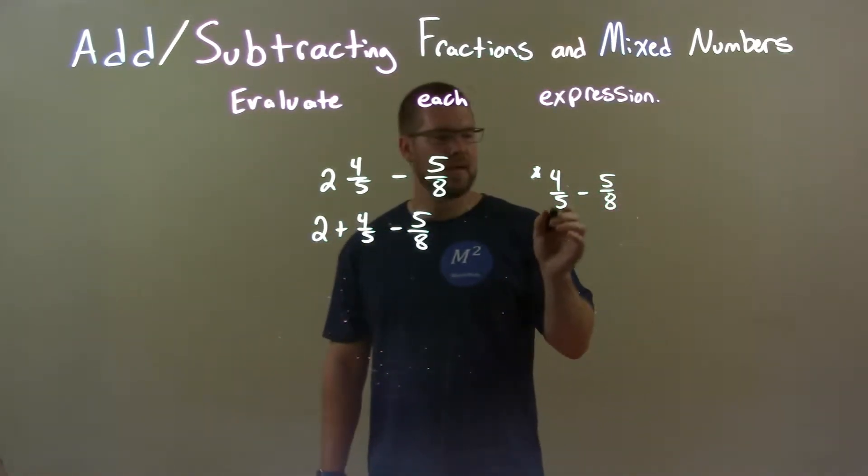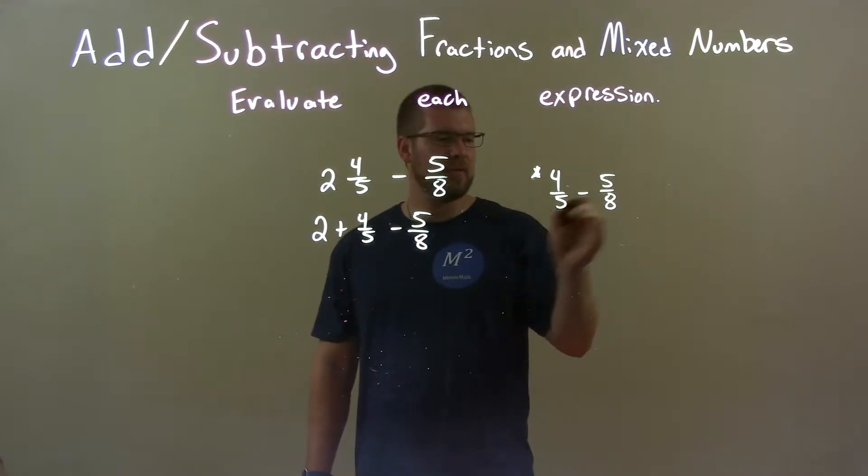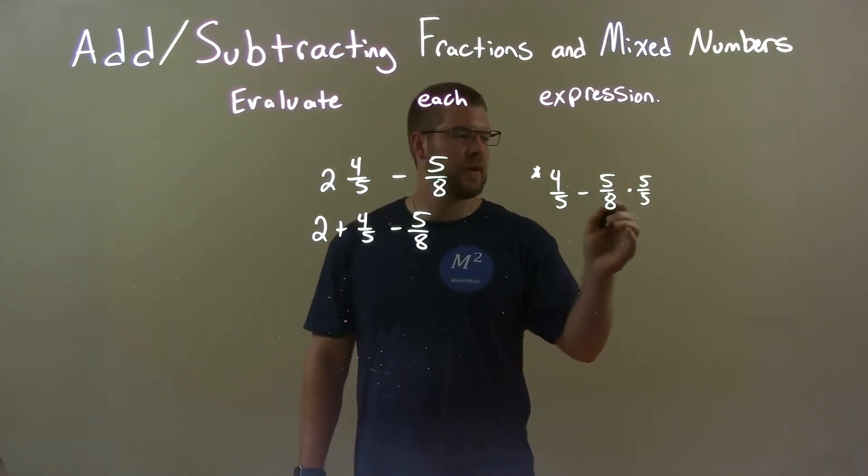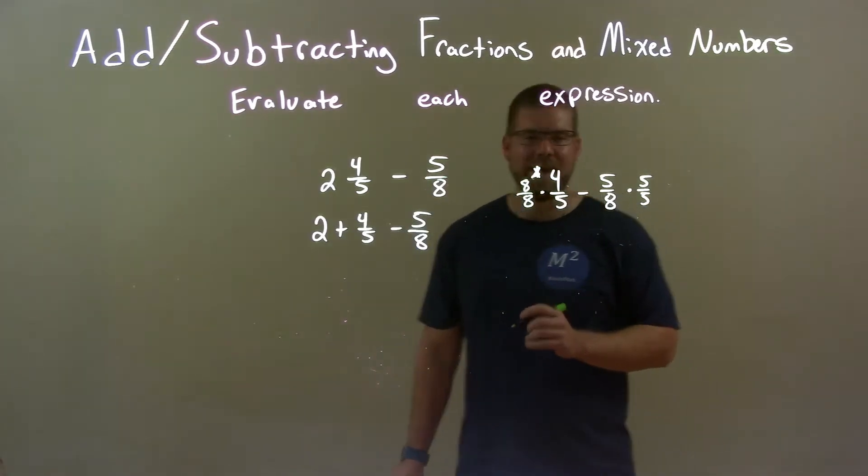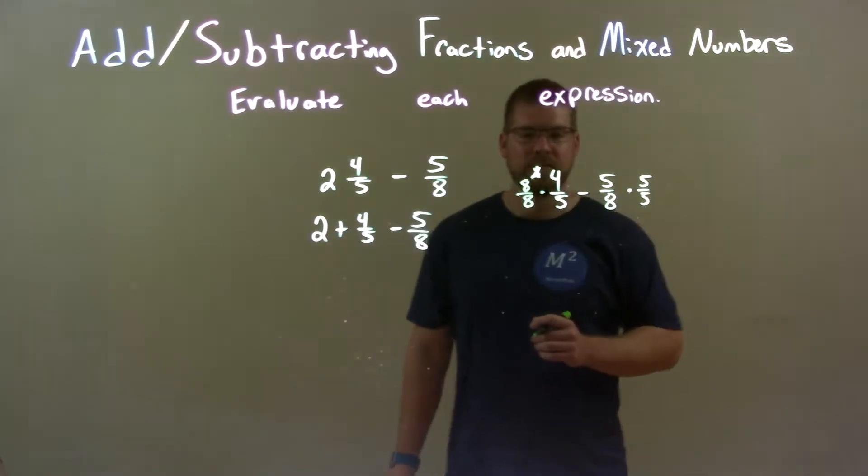To do that, I'm going to take this base and multiply it over itself to the second number, and this base, the denominator, same thing to the first number, 8 over 8. That will always ensure that we have the same denominator.